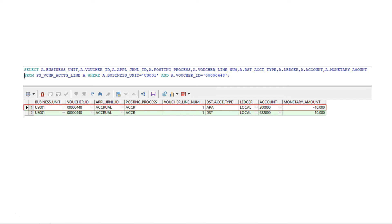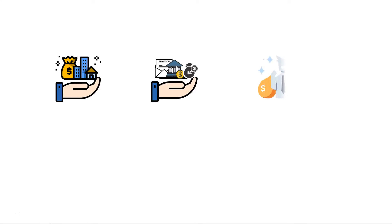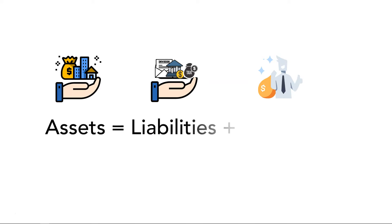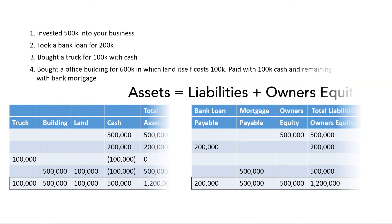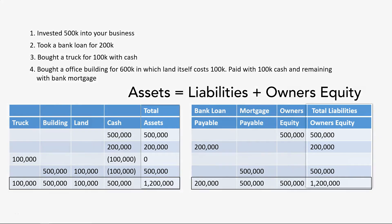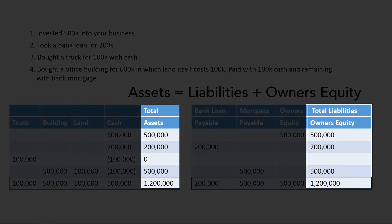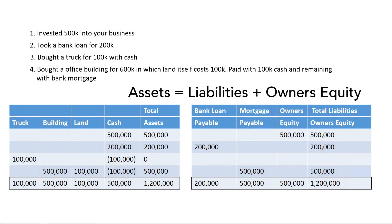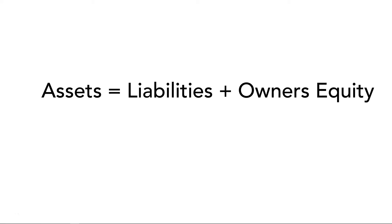Let's continue where we left off in the previous episode and go through some necessary concepts. In the previous episode, we saw how businesses track what they own, what they owe, and how much owners invested using the accounting equation: assets equal to liabilities plus owners' equity. We practically did some example transactions and understood that assets must always equal liabilities plus owners' equity. We also understood that the accounting equation is also known as the balance sheet equation.